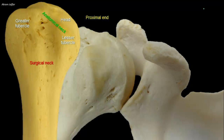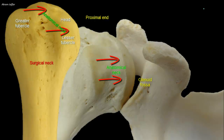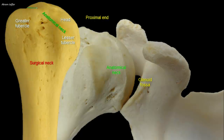The spherical head of the humerus articulates with the glenoid fossa of the scapula. The anatomical neck is formed by the groove circumscribing the head and separating it from the remaining part of the proximal end, that's to say, the greater and lesser tubercles. The anatomical neck indicates the line of attachment of the capsule of the shoulder joint.